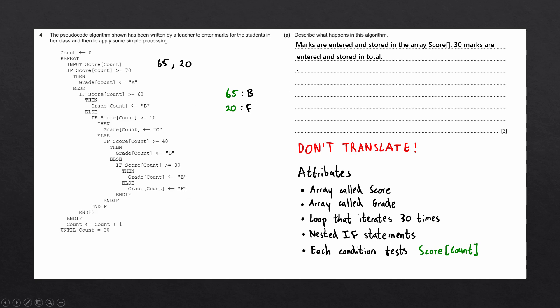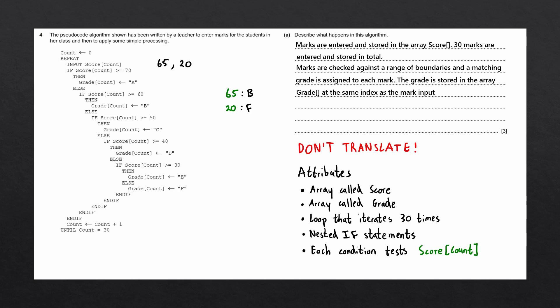Let's write down our findings. Marks are checked against a range of boundaries and a matching grade is assigned to each mark. This grade is stored in the array called grade at the same index as the mark input, because count is keeping track of the array indexes. For example, the first value entered into score at index 0 will have its corresponding grade stored at grade index 0.